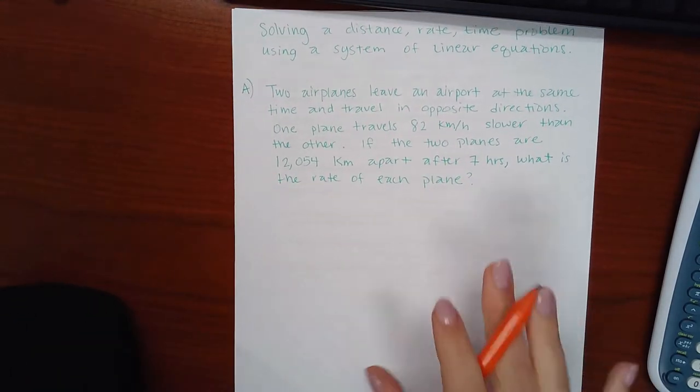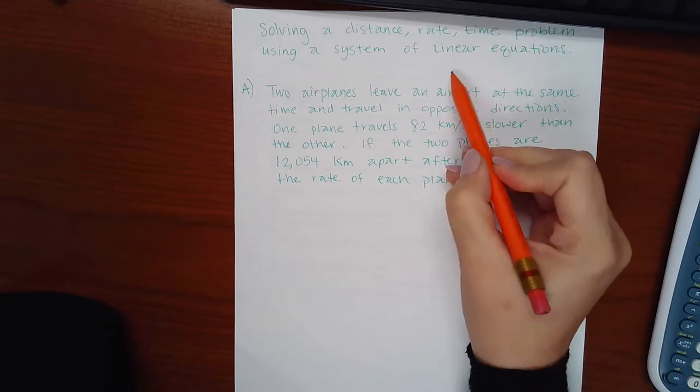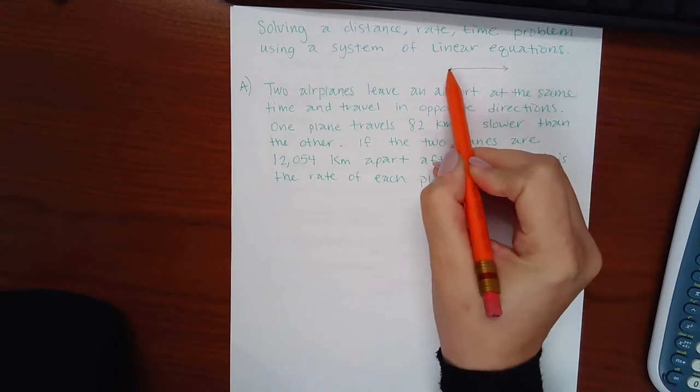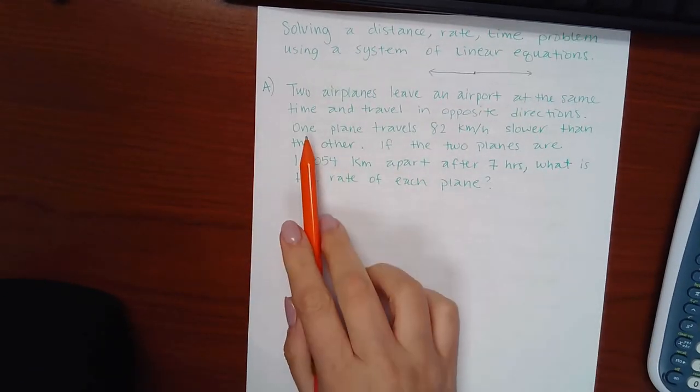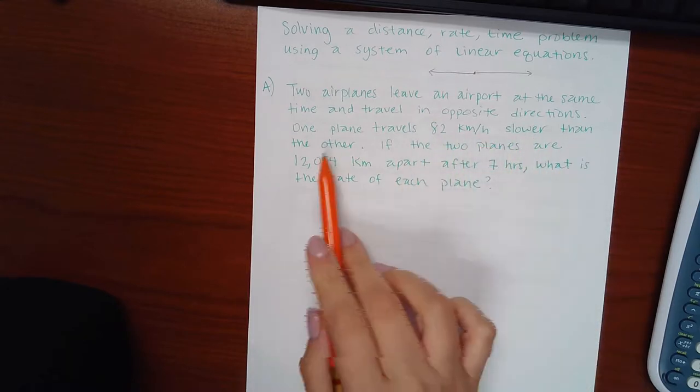So the first has to do with two airplanes leave an airport at the same time and travel in opposite directions. So here's the airport to me. This plane's going in that direction. That plane's going in that direction.